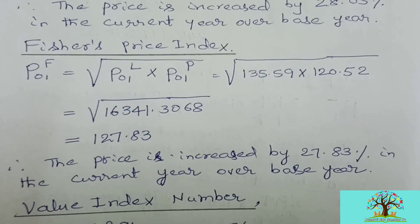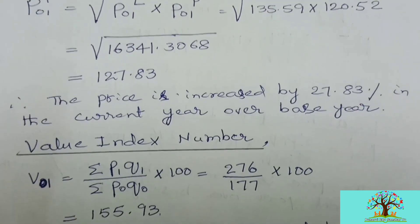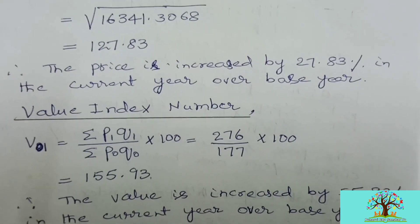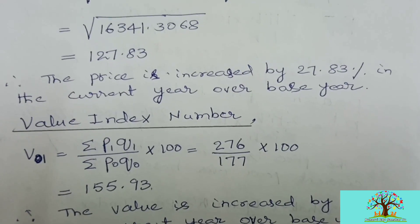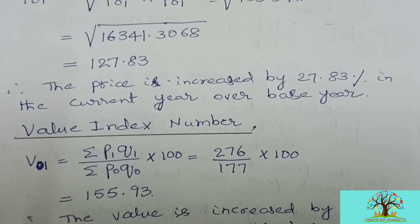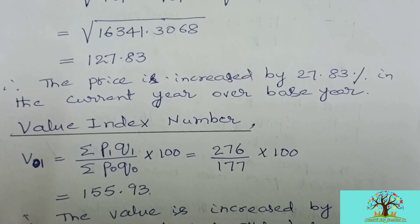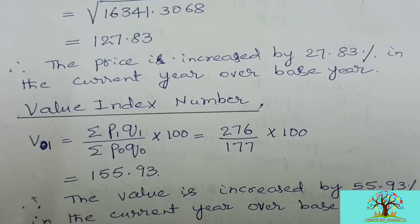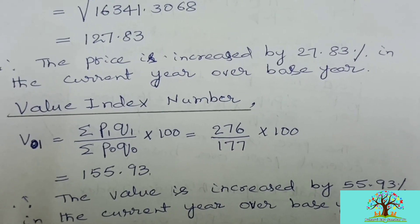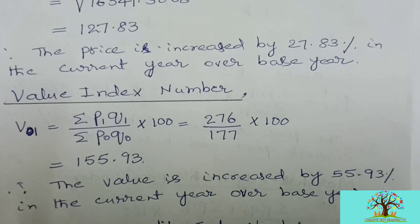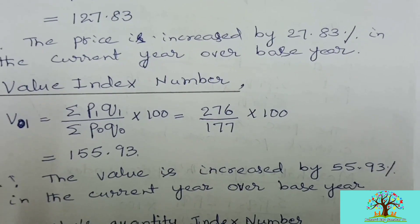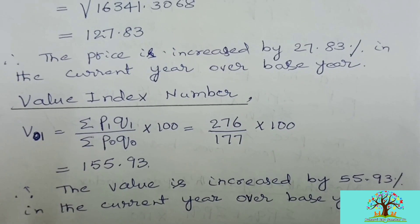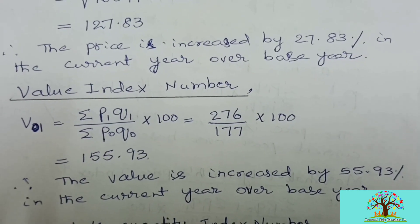Next, let us calculate the value index number. V01 equals summation p1·q1 divided by summation p-naught·q-naught, multiplied by 100. That equals 276 divided by 177 multiplied by 100, giving 155.93. Subtracting 100 gives 55.93 percent increase. Conclusion: the value increased by 55.93 percent in the current year over the base year. All the different price index numbers and the value index number have now been calculated.